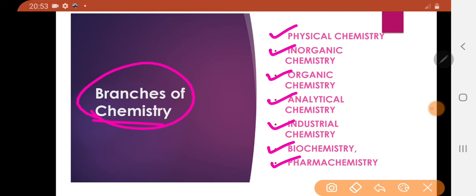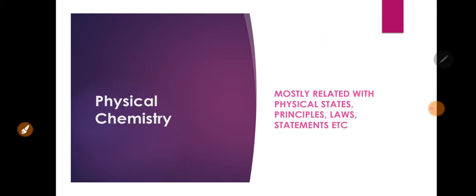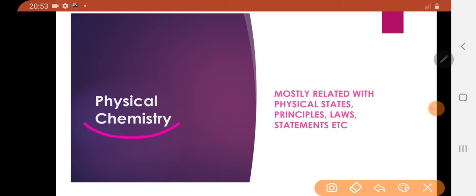Environmental chemistry and pharma chemistry are also branches of chemistry. We will first discuss what is physical chemistry. Physical chemistry is a branch of chemistry which relates with physical properties of matter.